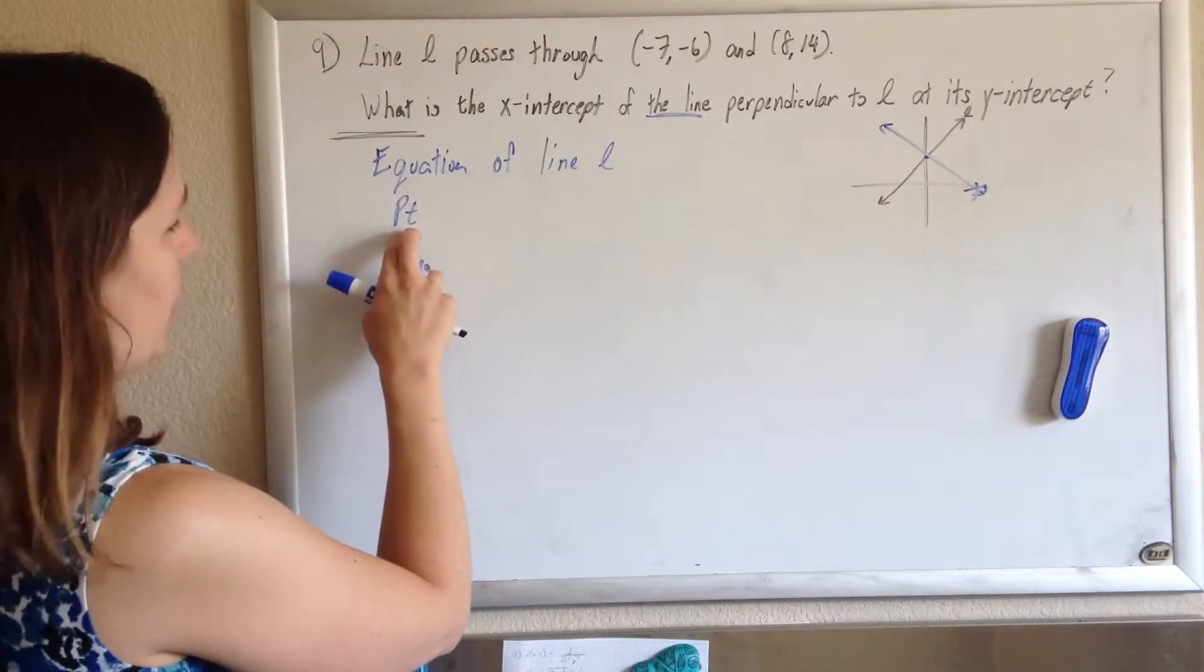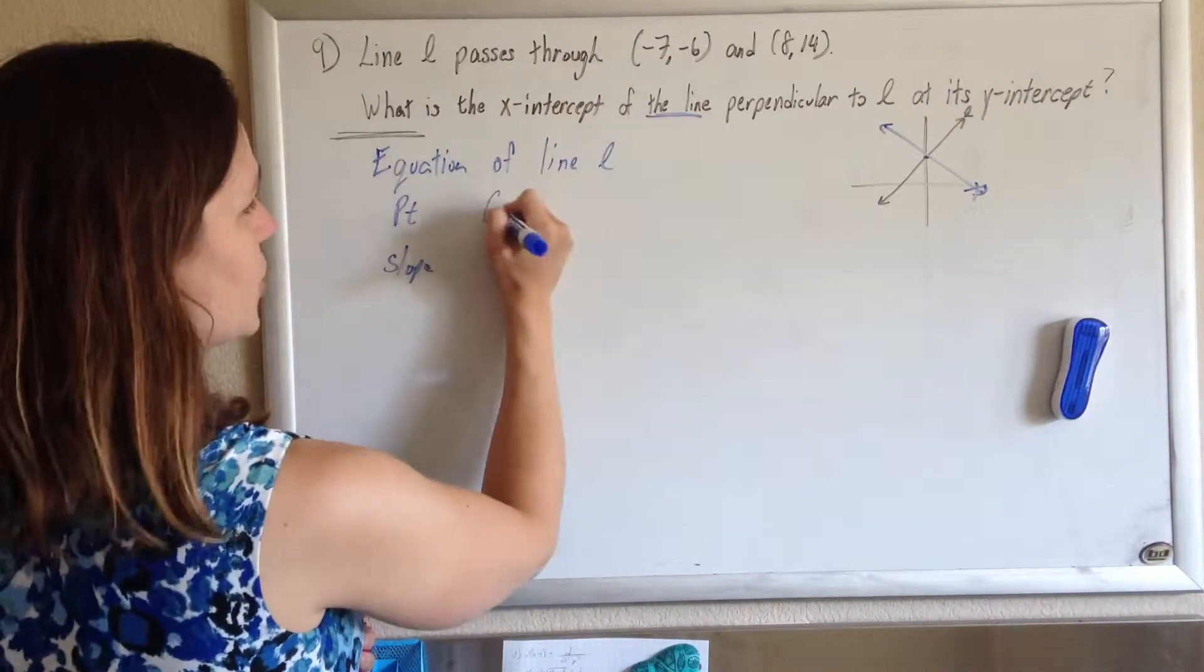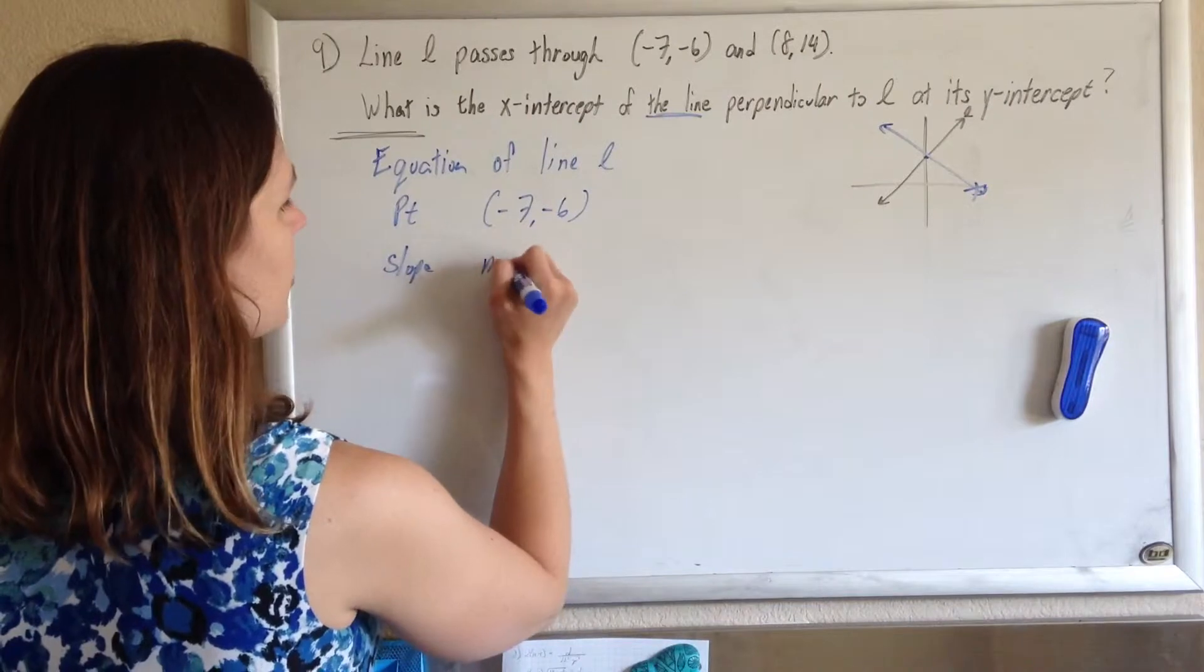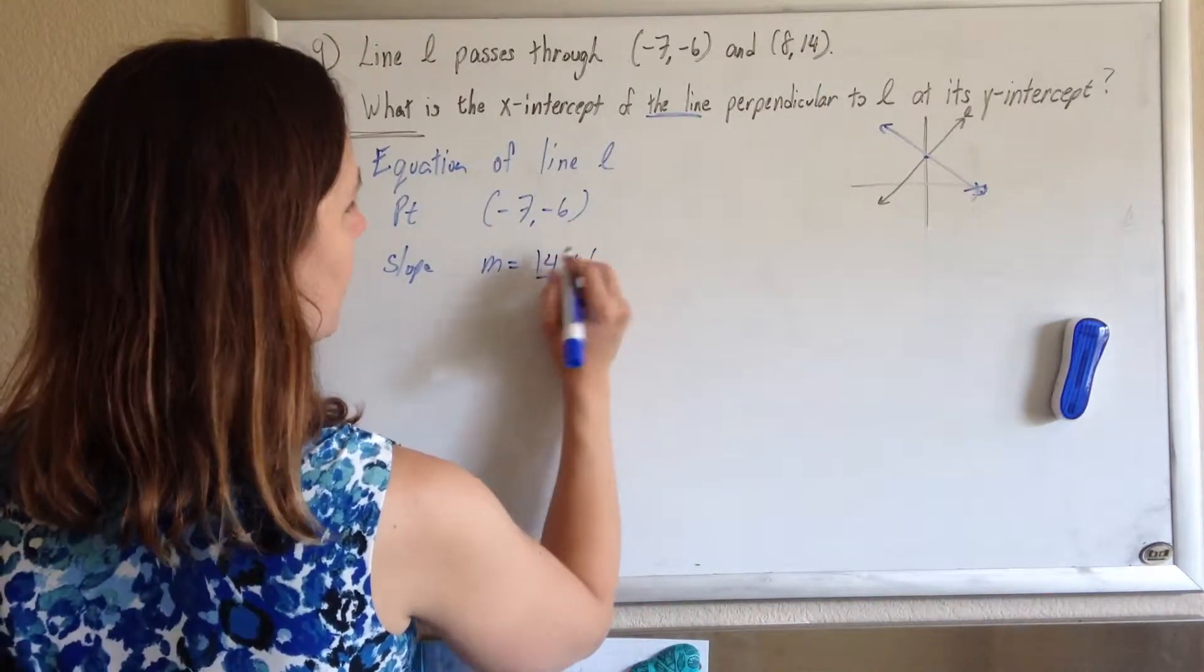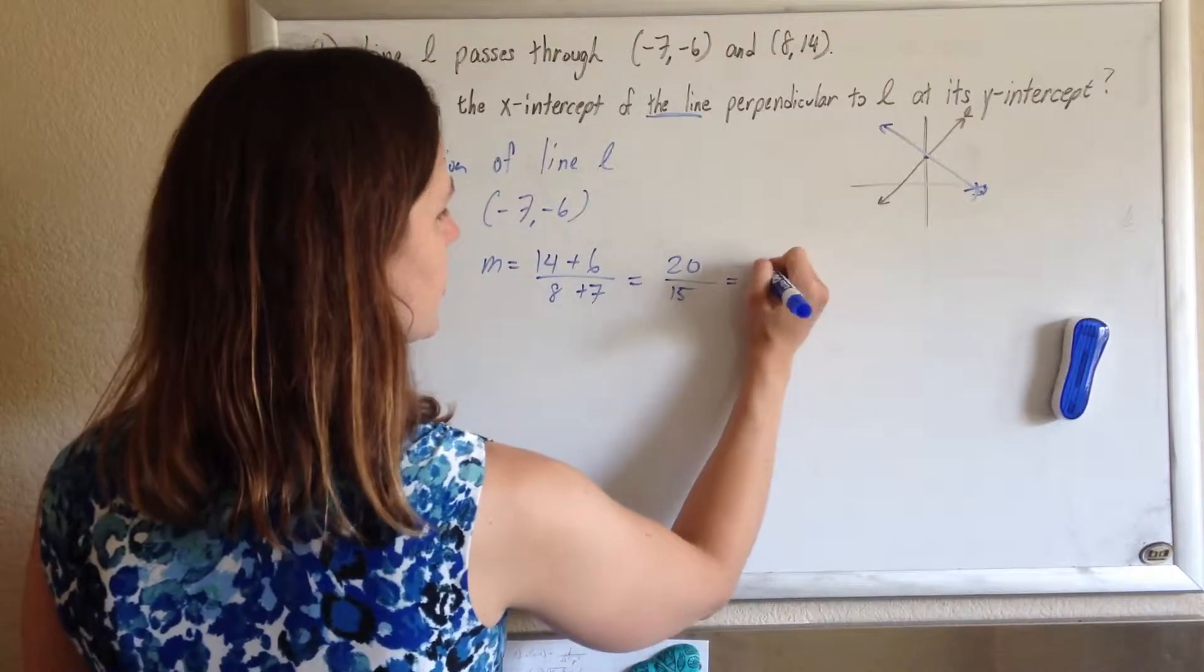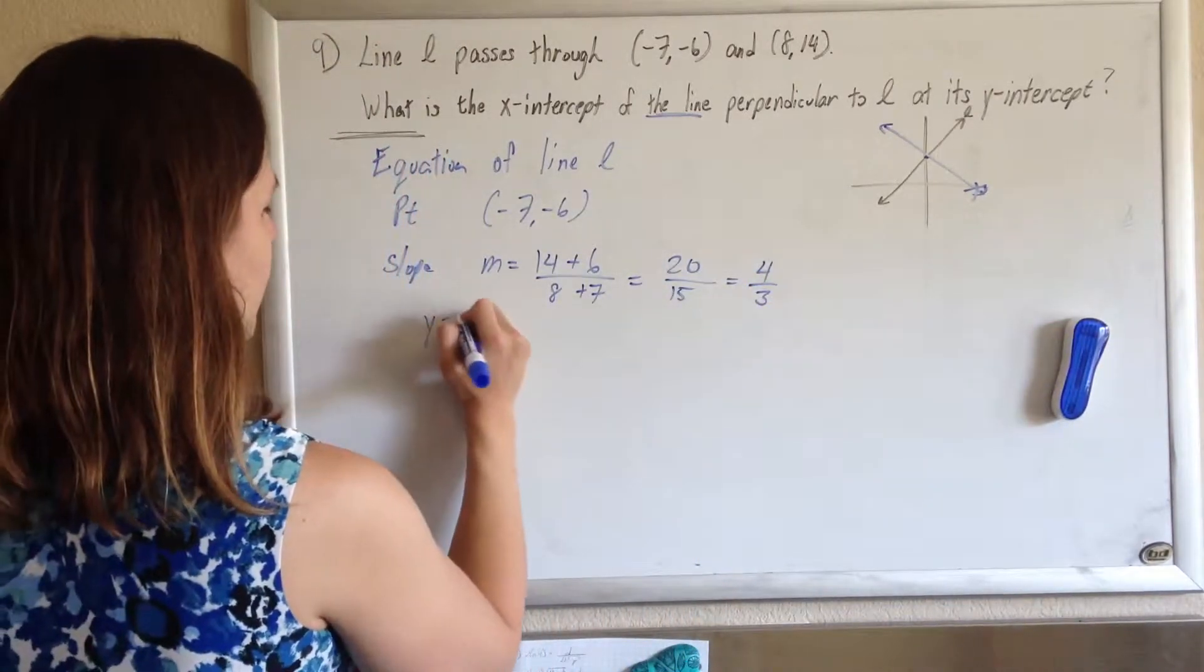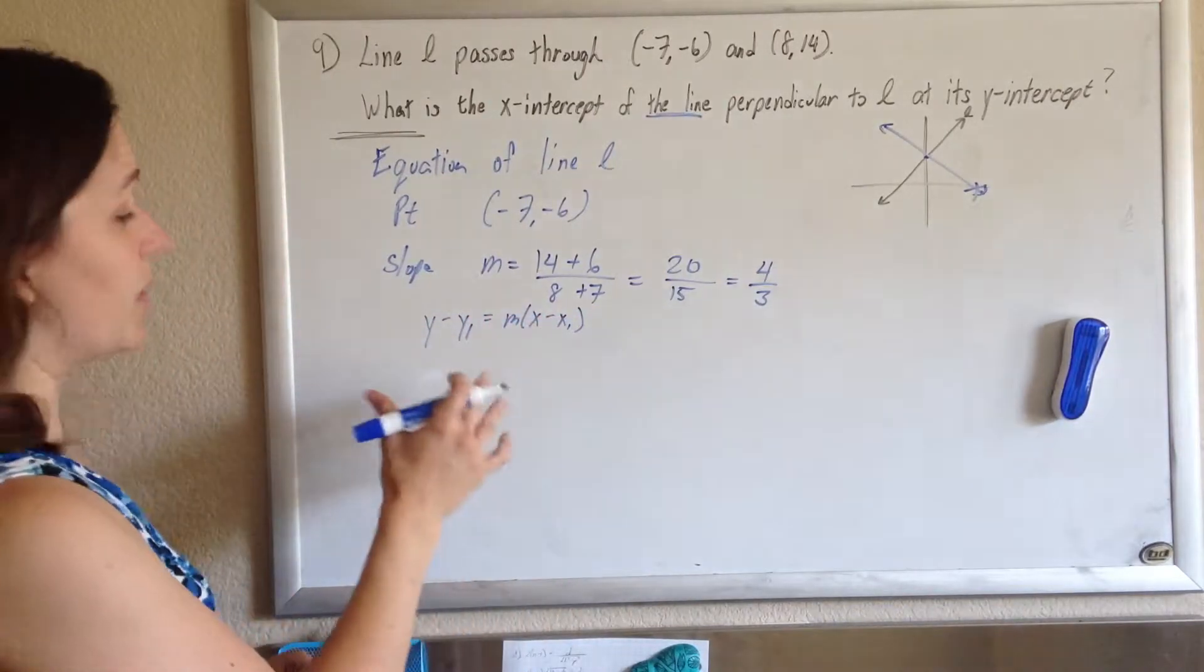The point that I know is on line L, you can choose either one, it doesn't matter. The slope is y2 minus y1 over x2 minus x1, so I'm getting 20 over 15, which reduces to 4 over 3. If I do my y minus y1 equals m times x minus x1 for an equation of my line,